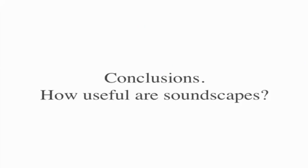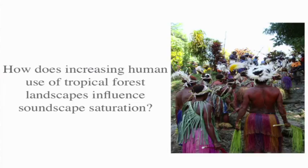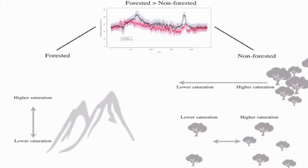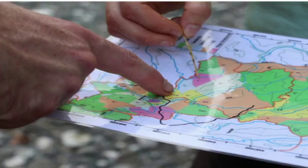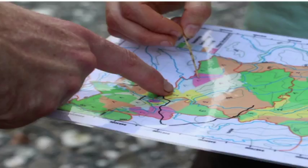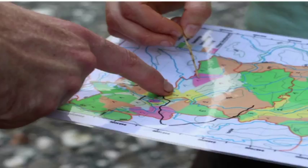To conclude, I want to answer two questions. The first is: how does increasing human use of forest in Papua New Guinea influence soundscape saturation? The most important thing is whether the site is forested or not. From the conservation perspective, we think it's probably a good idea that each community has its own conservation zone and gardening zone, because the further you go from continuous forest, the less soundscape saturation — and therefore probably the less biodiversity — you have. Also, the communities probably wouldn't want to share conservation zones anyway, partly because they often don't speak the same language as the neighboring village.